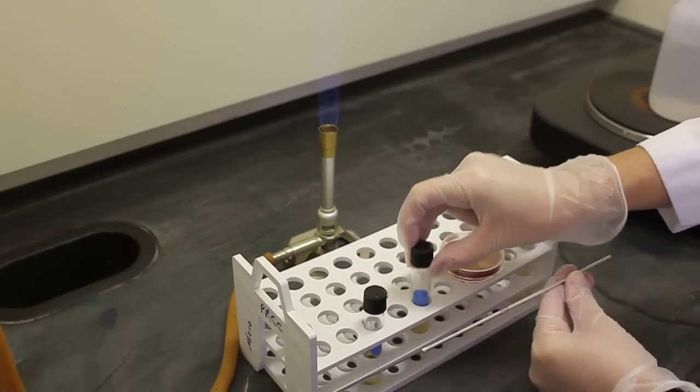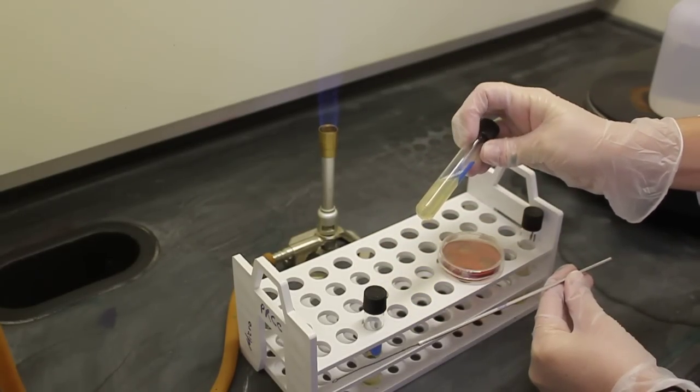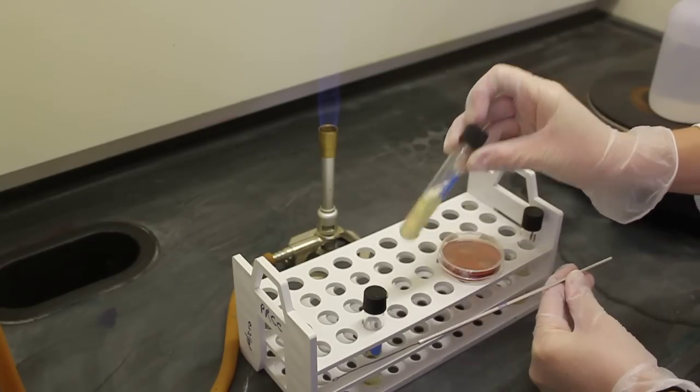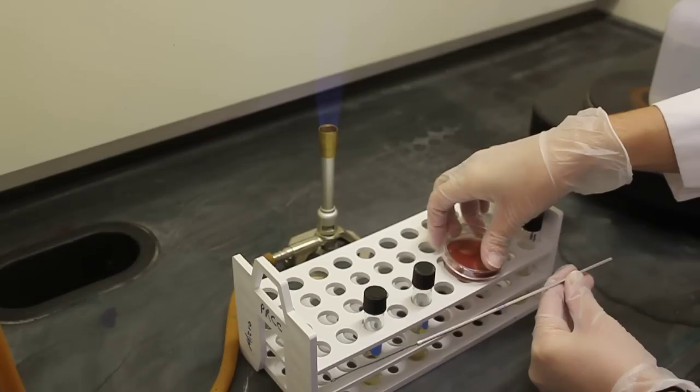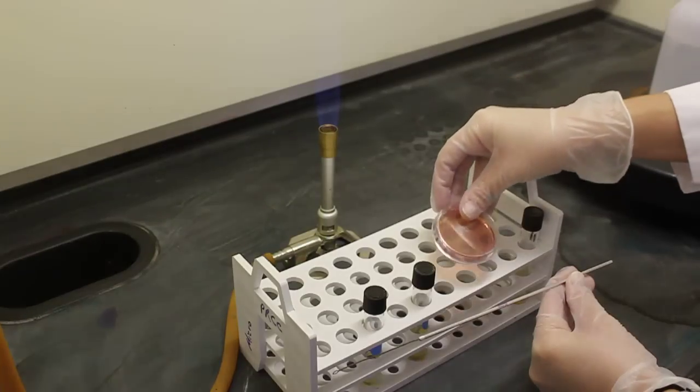We use solid media in a test tube. This type of media is known as a slant due to the slanted appearance of the media in the top of the tube. And when solid media is in a petri dish, this is called a plate.